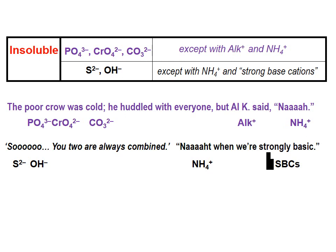And the last one, up at the top here: the sulfide and hydroxide ions tend to form insoluble compounds, except with the ammonium ion and what I've termed the strong base cations. So at the bottom of the page in black: 'You two are always combined' — they tend to be bonded, they tend to be insoluble — 'Not when we're strongly basic.' Anything with ammonium bonding with these is soluble. The strong base cations are the five alkali metals, then these three alkaline earth metals — calcium, strontium, barium. If you look at that shape, it's a lowercase b — B for base. Any of those cations bonded with sulfide or hydroxide, we classify that as a soluble substance.